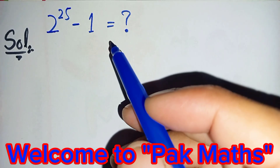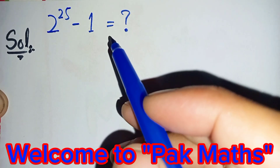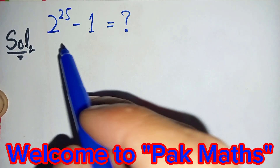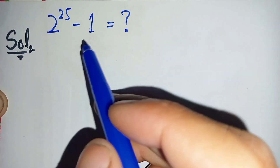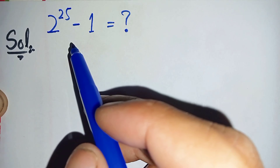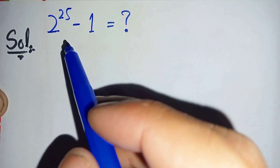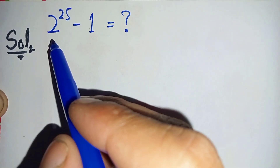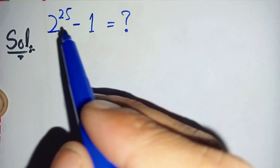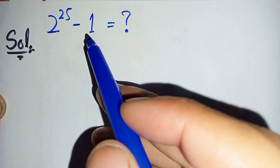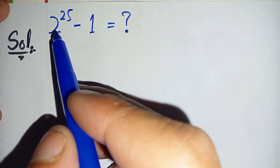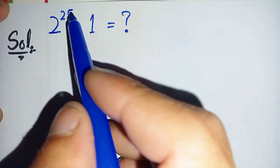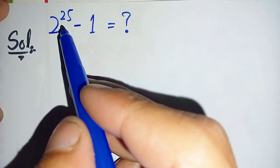Hello, you are welcome to Parkmas. Here we will solve and find the value of this simplification math problem, which is 2 raised to power 25 minus 1. First of all, we will change this power 25.